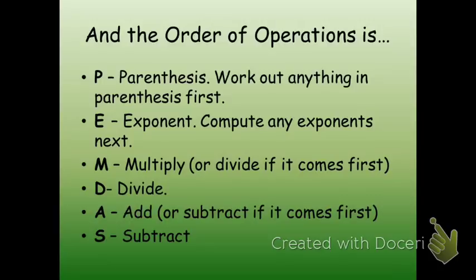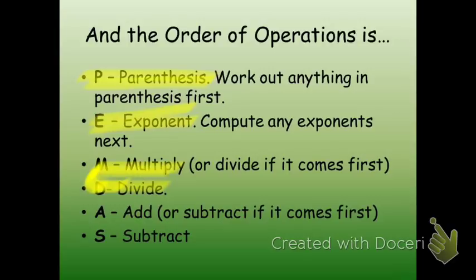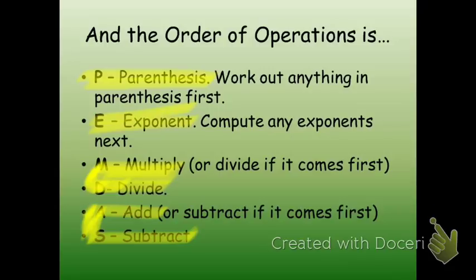The order of operations are: parentheses — meaning you work out anything in parentheses first; next comes exponents — meaning you compute any exponents next; then multiplication and division, and you'll do whichever comes first working left to right; and then adding and subtracting, which like multiplying and dividing, you do from left to right. There might be instances where you subtract before you add, or where you divide before you multiply, and we'll go over examples of that shortly.